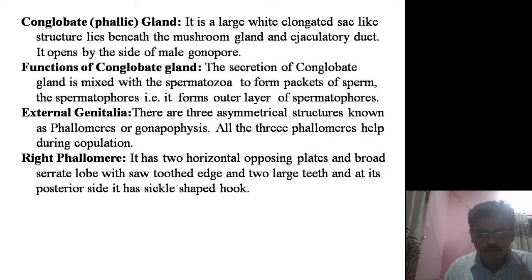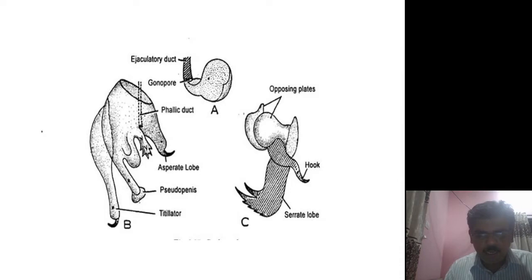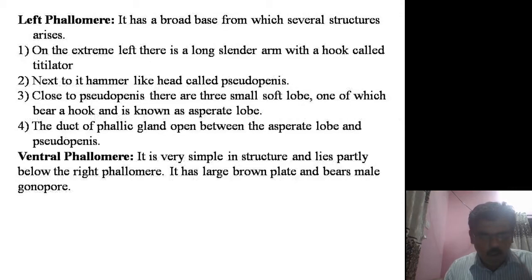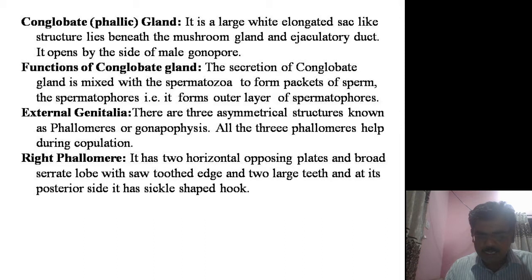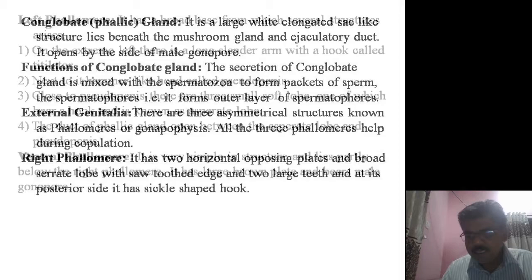The male genitalia is present in the male cockroach and has three parts or three phallomeres which help the cockroach during copulation. The first one is the right phallomere, another one is the left phallomere, and the third part is the ventral phallomere.